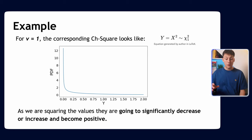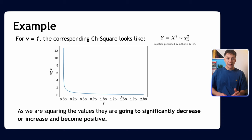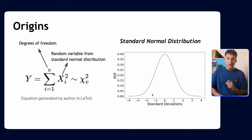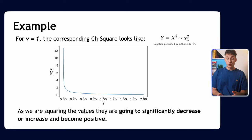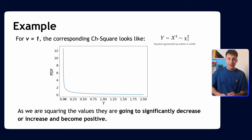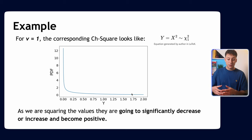Here's an example plot where we have one sample. We're sampling just one value from the standard normal distribution and squaring it. As you can see, it's very left-skewed — the peak is to the left. This makes sense because we're very likely to sample a value between minus one and one, and when you square a value between minus one and one it actually gets smaller. That's why the distribution is very skewed to the left, and we're very unlikely to get anything to the right.